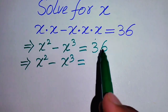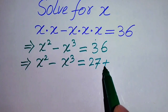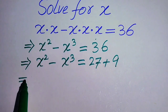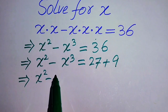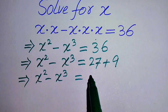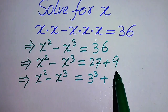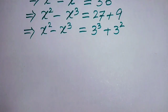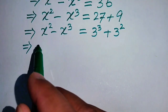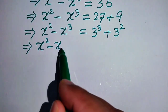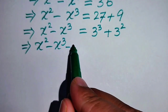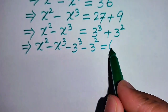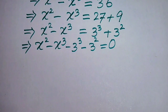We break 36 as 27 plus 9 — we know 27 plus 9 equals 36. We write the right-hand side in terms of prime factors: 27 is 3 cubed and 9 is 3 squared. In the next step, we move all terms from the right-hand side to the left-hand side: x squared minus x cubed minus 3 cubed minus 3 squared equals 0.